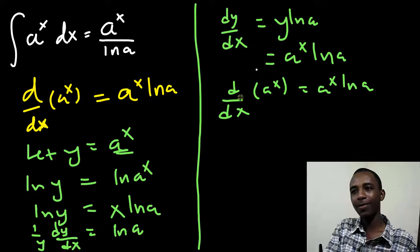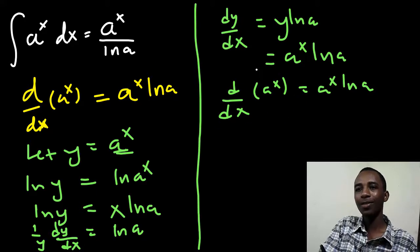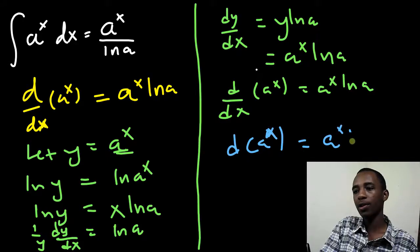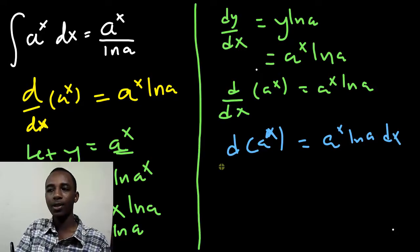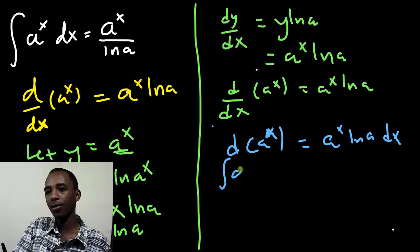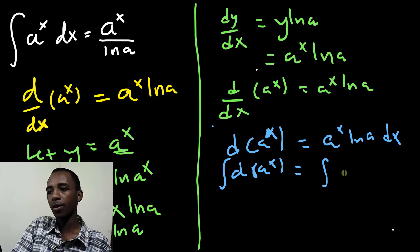So, as you can see, this is a differential equation that we can actually solve. If I multiply dx on both sides, let's get another color. I'll have d of a to the x, equals a to the x times natural log of a times dx. So, if I take integrals on both sides, the integral of d a to the x, and the integral of a to the x natural log of a dx.